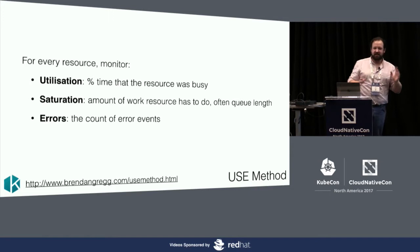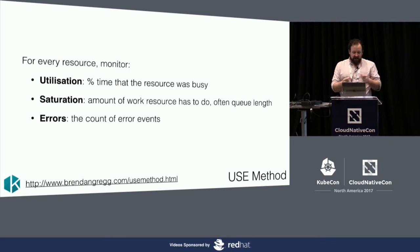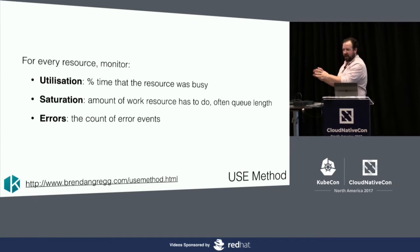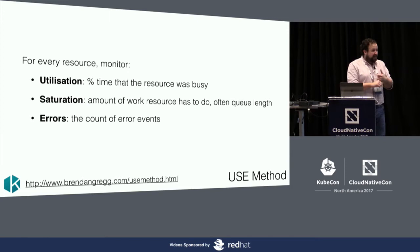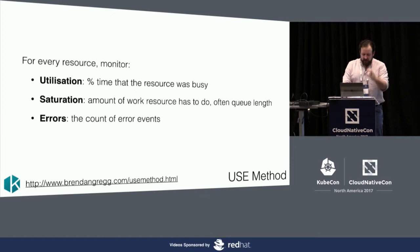Saturation — per resource the units are going to be different. I like to try and find a way to normalize it to a percentage, because then I don't really have to interpret the number. And then errors: what is the rate of errors for this thing? Resources are CPUs, disks, memory, network. Some things people normally forget are interconnects and so on. And this is very, very targeted at infrastructure, at real things. It would be quite challenging to apply this to your microservices, which is why we did the RED method.